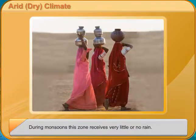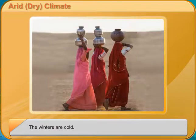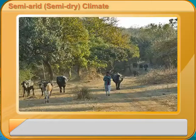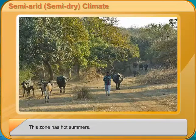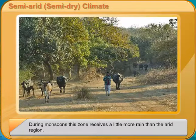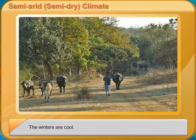Tropical wet and dry climate. This zone has hot summers and gets plenty of rain during the monsoons. The winters are dry and a little less cold than other zones. Almost the entire east coast of India and parts of the west coast are in this zone. The southeastern coast of India, which lies in this zone, has a winter monsoon. Maharashtra, Andhra Pradesh, Orissa, West Bengal, and Chhattisgarh have this type of climate.